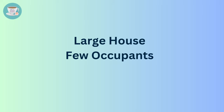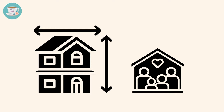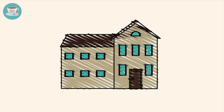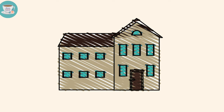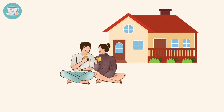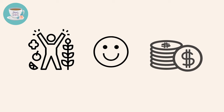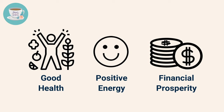Large house with few occupants. In feng shui, the size of a house should be proportional to the number of its occupants. When the size of a house exceeds the needs of its occupants, it can result in decreased vitality and energy. The excess space can result in stagnant energy, which can negatively impact the overall fortune of people living there. Therefore, it's important to ensure that the size of the house matches the number of people living in it, to create a harmonious and balanced living environment that promotes good health, positive energy and financial prosperity.